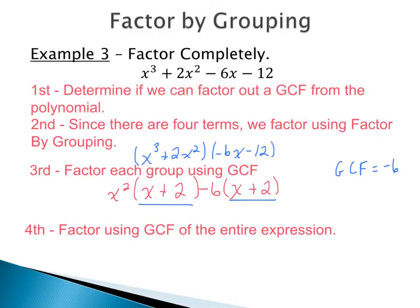We factor out the greatest common factor of x plus 2 from the entire expression. Taking that out, we're left with x squared from the first group and negative 6 from the second. So the completely factored form is x plus 2 times the quantity x squared minus 6.